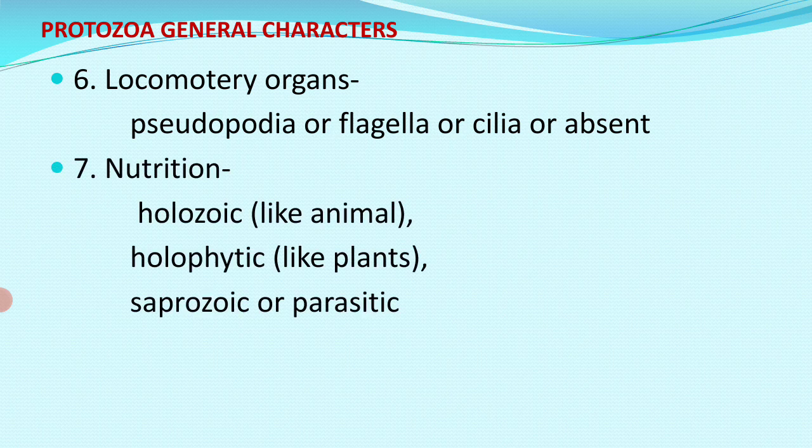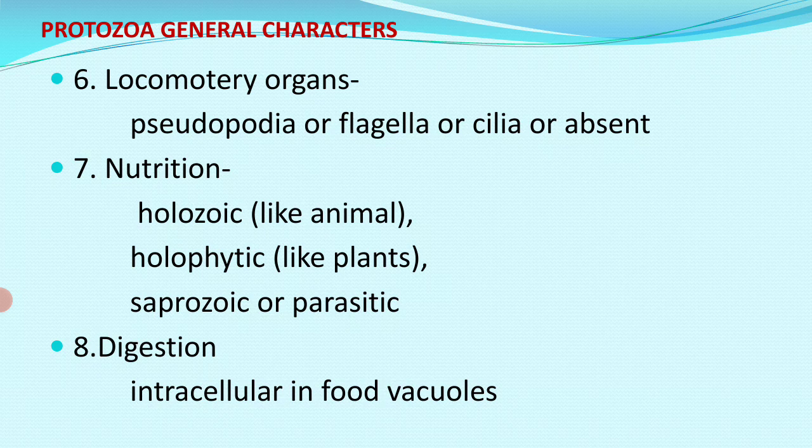When we think about nutrition, there are different ways of nutrition in these organisms. Some organisms are holozoic, following animal-like nutrition. Some organisms are holophytic, like plants. Saprozoic or parasitic nutrition is also found in some organisms. They do not have a definite oral aperture, but in some cases an oral aperture is also found.